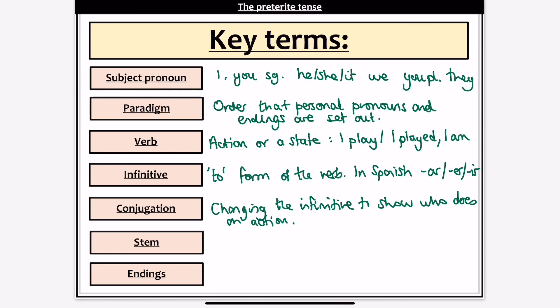If we remove the AR, ER, or IR from our verbs, we get what we know as our stem. The stem is the building block to which we then add our endings. Our endings show who does, did, or will do an action, and they also show us what tense it happened in — whether it was the preterite, the imperfect, the present, or the future.